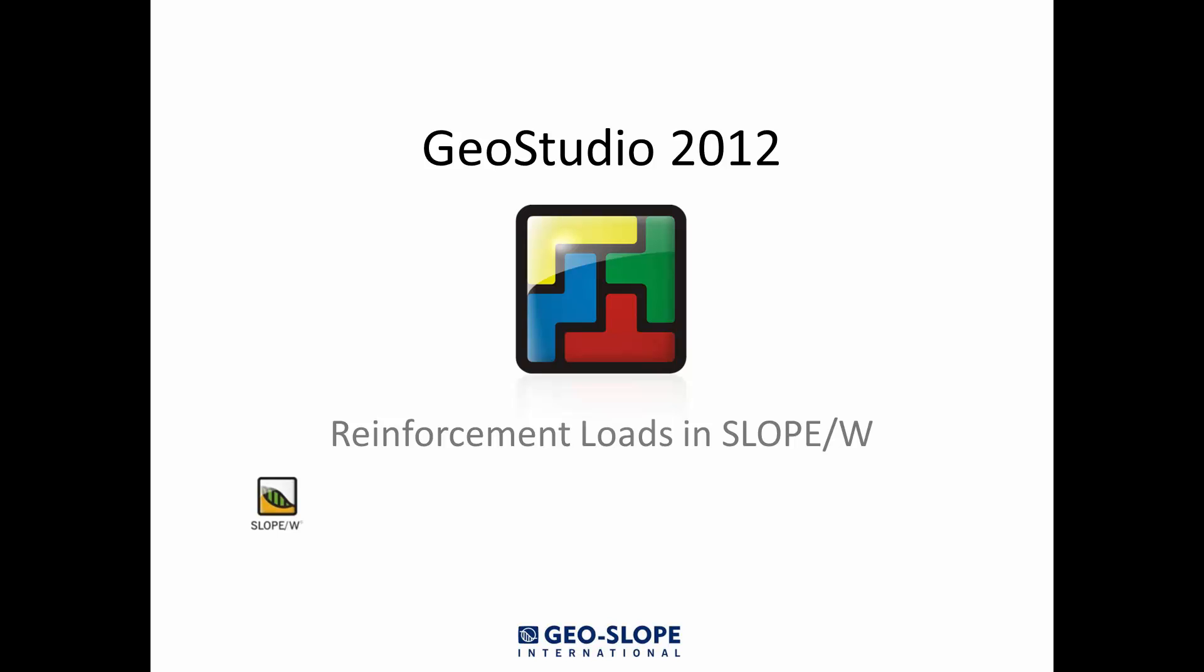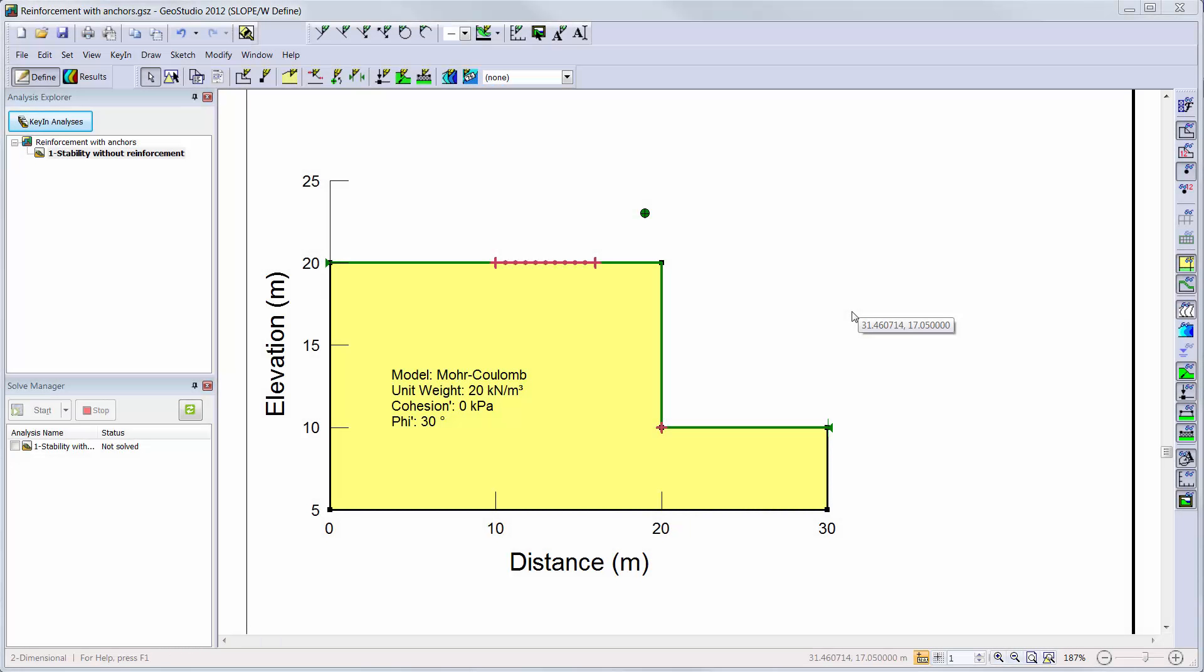This tutorial assumes that the viewer is already familiar with the basic setup of a model in Slope W. We will start with the Slope W limit equilibrium analysis already open. This analysis has been created to simulate the stability of a slope that does not have any reinforcement loads applied. Before solving this analysis, let's add a second analysis to the analysis tree to simulate the influence of a reinforcement load on the factor of safety of the slope.